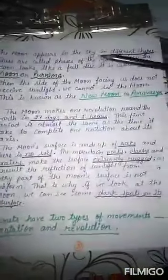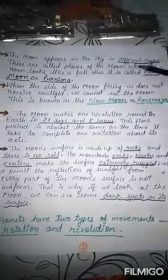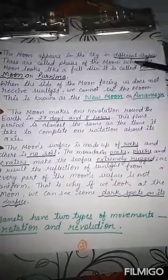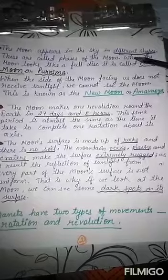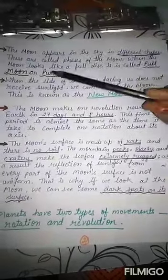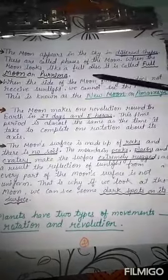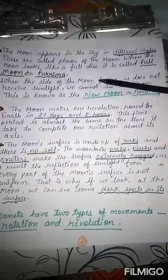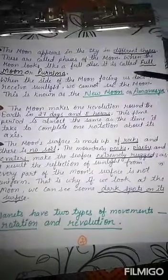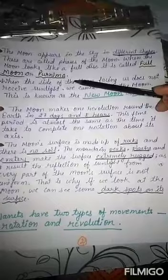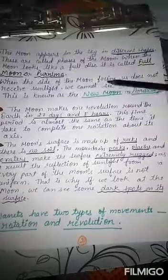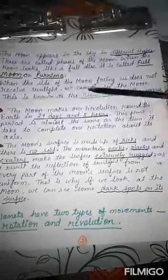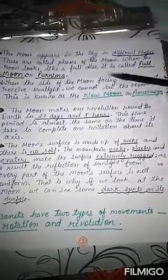The moon appears in the sky in different shapes — these are called the phases of the moon. Have you seen the different shapes and faces of the moon as seen from Earth? When the moon looks like a full disk, it is called a full moon or Purnima. When the side of the moon facing us does not receive sunlight, we cannot see the moon.